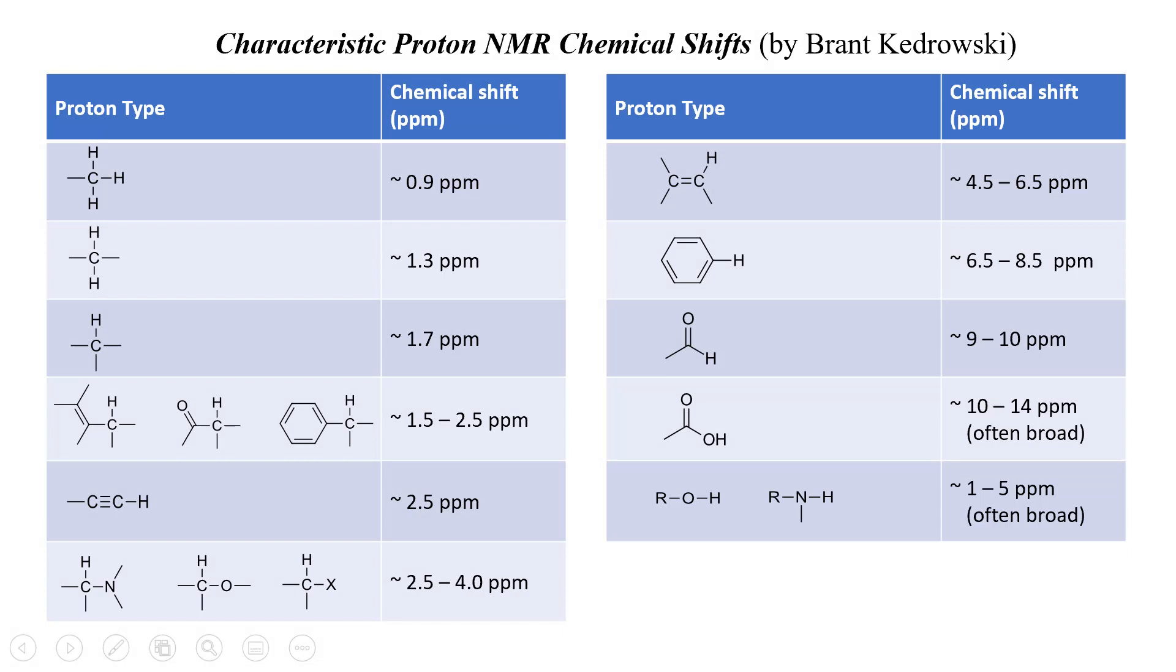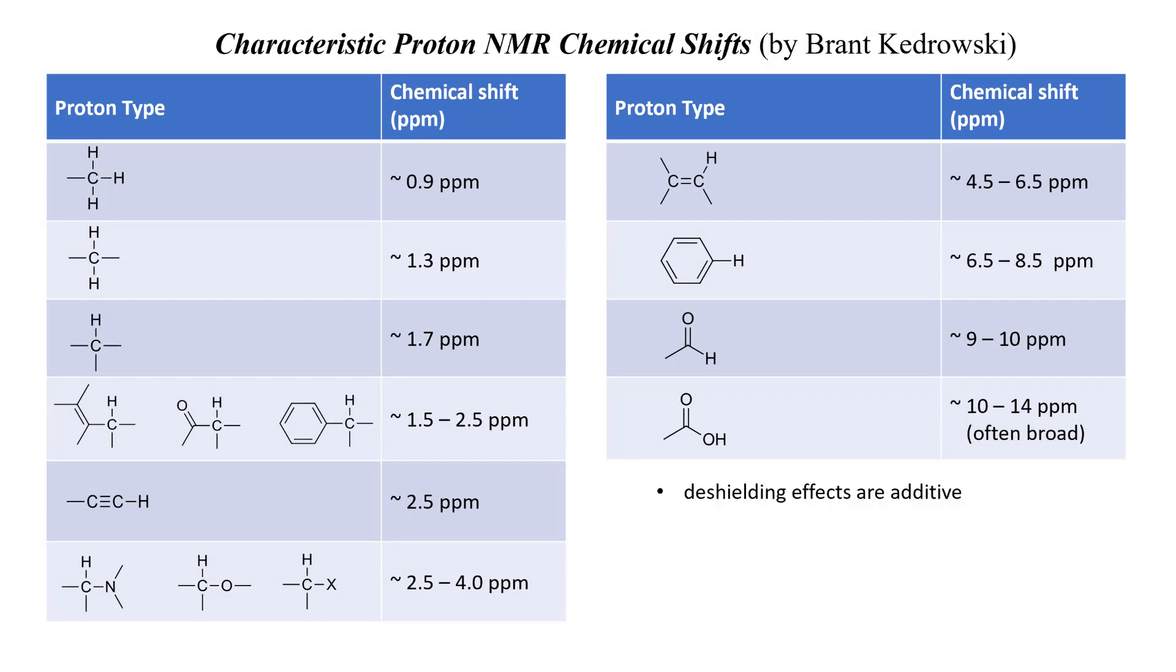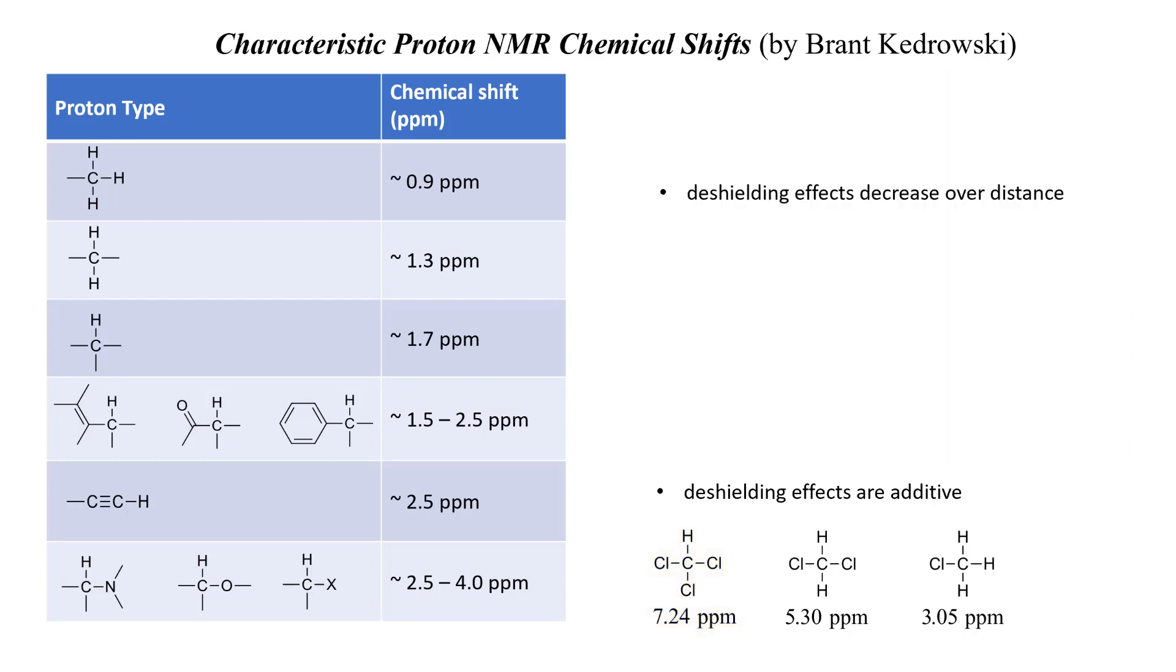There are two more points I want to make about proton chemical shifts. The first is that deshielding effects are additive. For example, protons on a carbon attached to one electronegative element, one chlorine for example, have a chemical shift of 3.05, which you could pick out of the table. If we add another electron withdrawing chlorine atom, the chemical shift is increased further to 5.30 parts per million, and adding a third chlorine increases it further to 7.24 parts per million. Neither of these values are in the table, and in fact, 7.24 looks like it could be a benzene ring-type proton. However, it's the additive effects of three chlorines that put it in the same range.